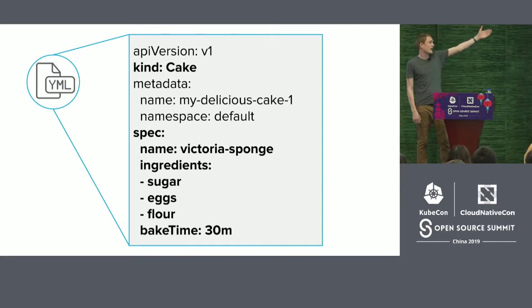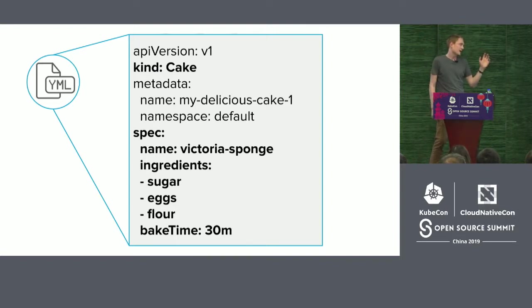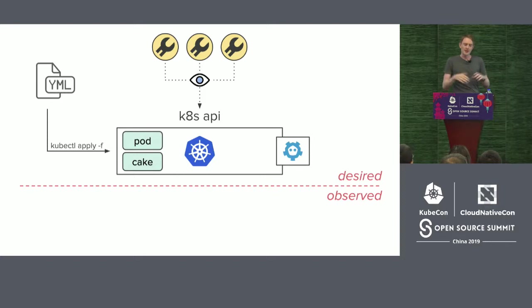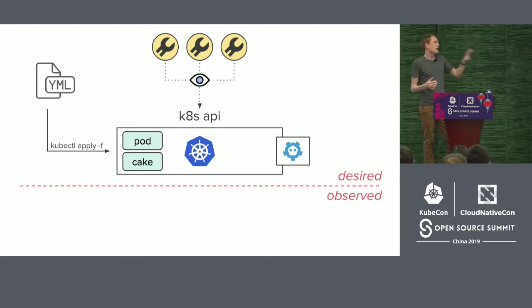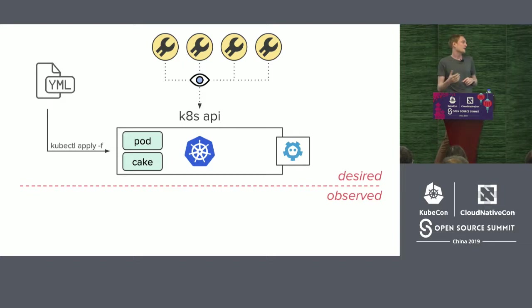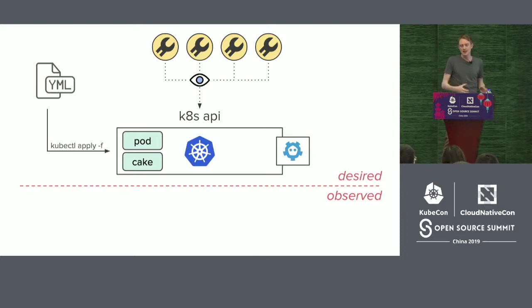I post that YAML and it gets stored in etcd. But by default, none of the Kubernetes controllers know anything about my cake types, so nothing happens. As the author of the CRD, I also need to bring my own custom controller. This custom controller watches for changes to type 'cake' and knows how to reconcile the world upon changes. This is really at the core of the extensibility of the Kubernetes API using CRDs and custom controllers — you can keep building up custom types and controllers.